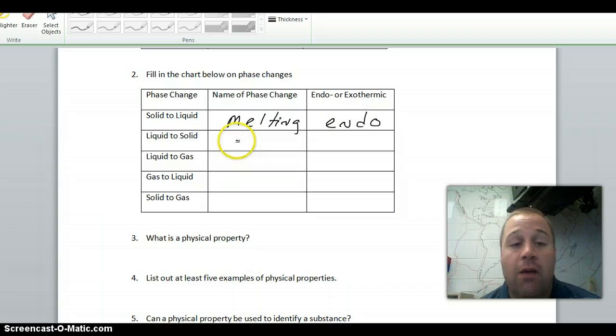The opposite of that, going from a liquid to a solid is freezing. Freezing, the liquid has more energy. It's moving around more than the solid has less. So we lost energy to go from a liquid to a solid, so that's exothermic.